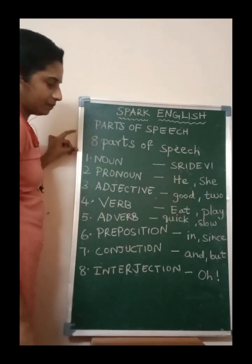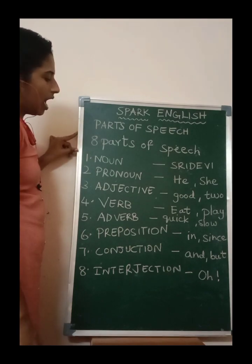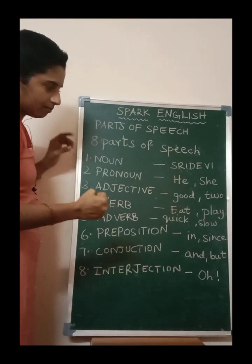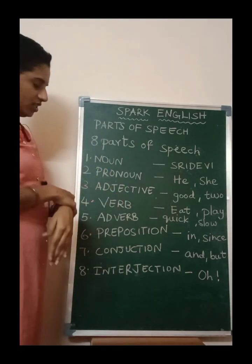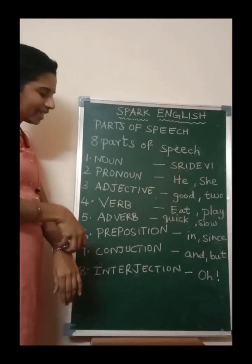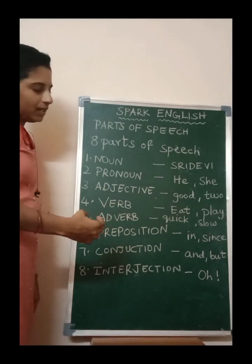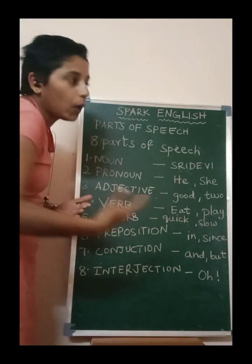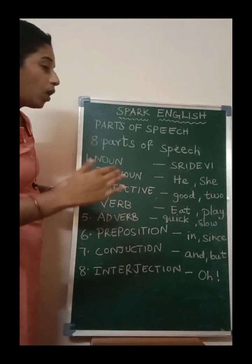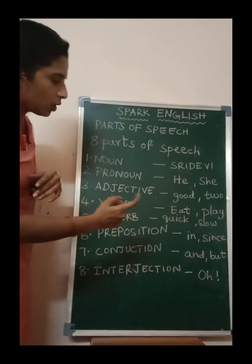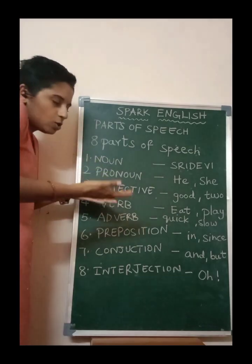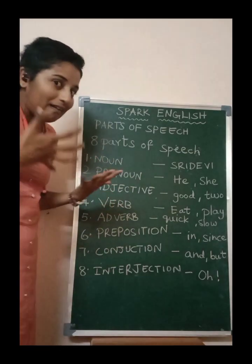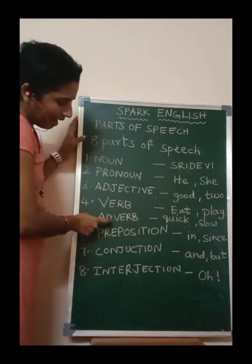And what is adverb? Adverb is used to say what kind of action it is — meaning it says something about the verb. For example, 'He is running quick' — running is a verb, and what kind of running it is? Quick. So quick is an adverb. 'He is eating very slow.' 'I am speaking loud.' These are adverbs.